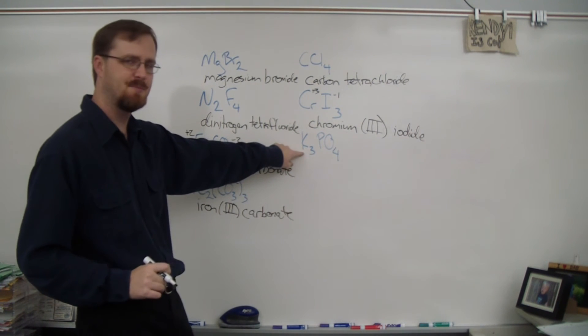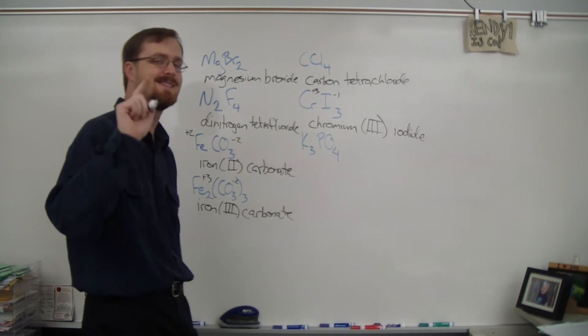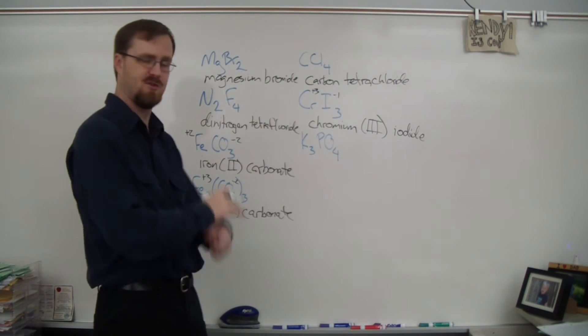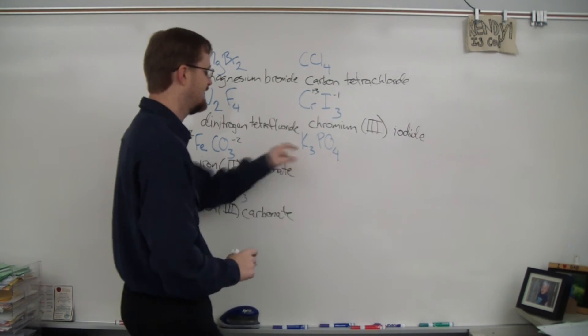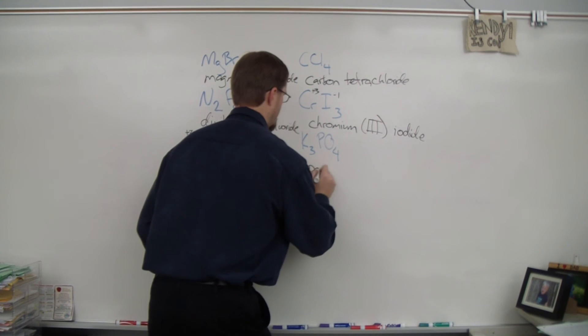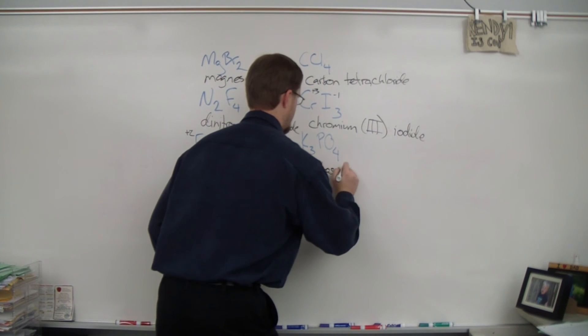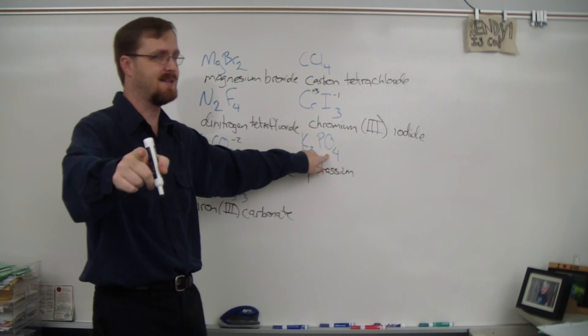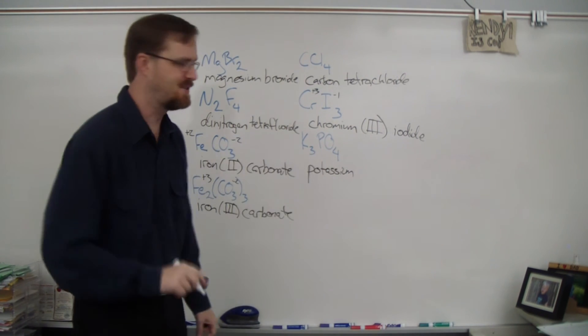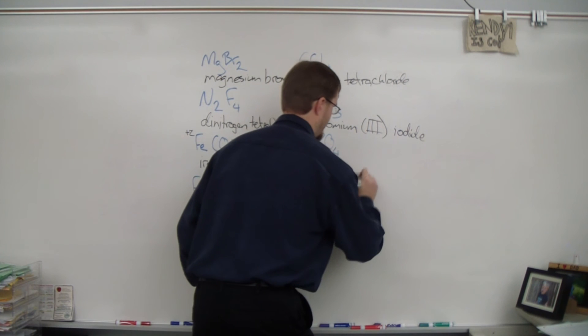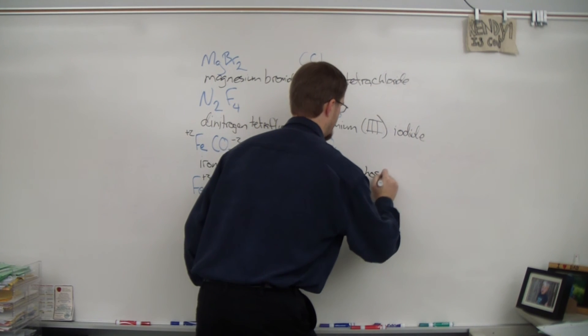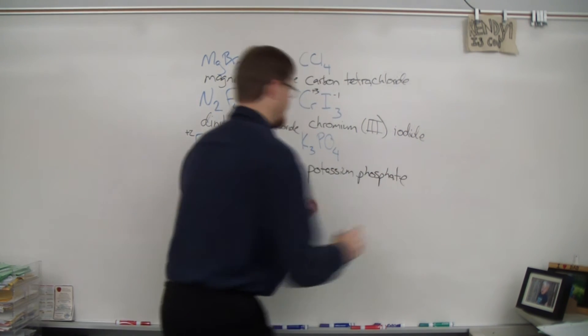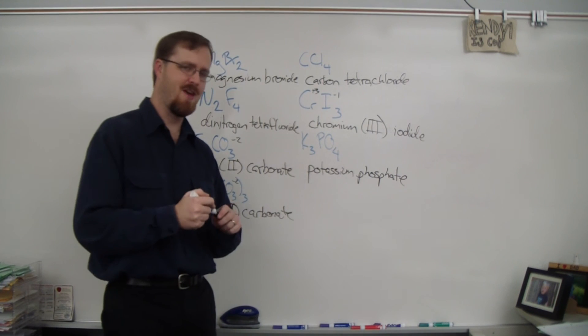One more example. K3PO4. The first element is potassium, which is a metal, but it is not a transition metal, so I'm just going to write the name as I see it. So K is potassium, and PO4 is another one of those polyatomic ions. It is phosphate, and since it's a polyatomic, I'm not going to change the name. It's just phosphate. Potassium phosphate. And there you go.